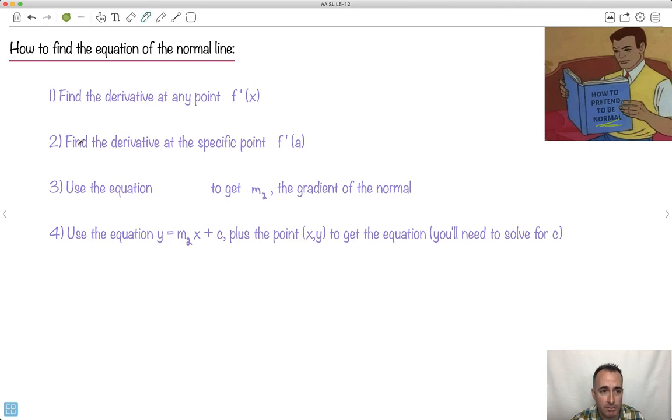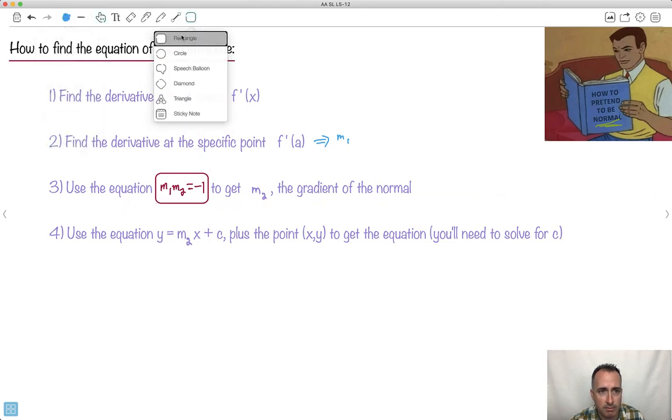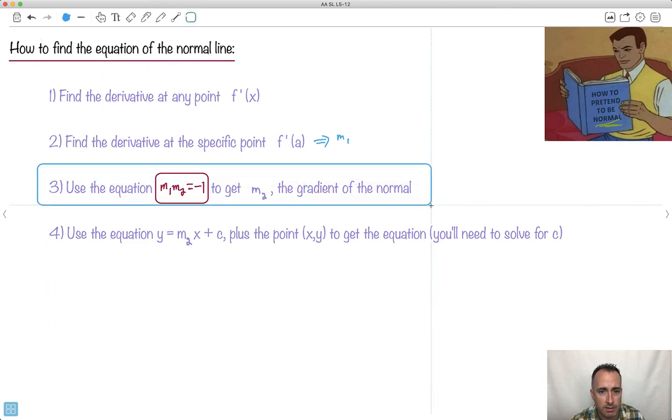Step one, find the derivative at any point. Still doing that. Step two, find the derivative at the specific point. Now the only difference is this is going to give you what I'm going to call m1. You're going to use an equation. This is a new thing that we're going to add. You're going to use this equation right here. m1·m2 equals negative one. This is something maybe worth memorizing.